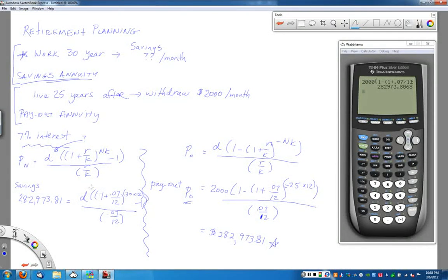When I go to solve this, notice I want D by itself, so I'm going to evaluate everything on the calculator first and then solve my equation. Remember it starts with double parentheses. Enter (1 + 0.07/12)^(30*12) - 1 divided by 0.07/12. Everything in that big box comes out to be 1,219.97. So 282,973.81 equals D times 1,219.97.